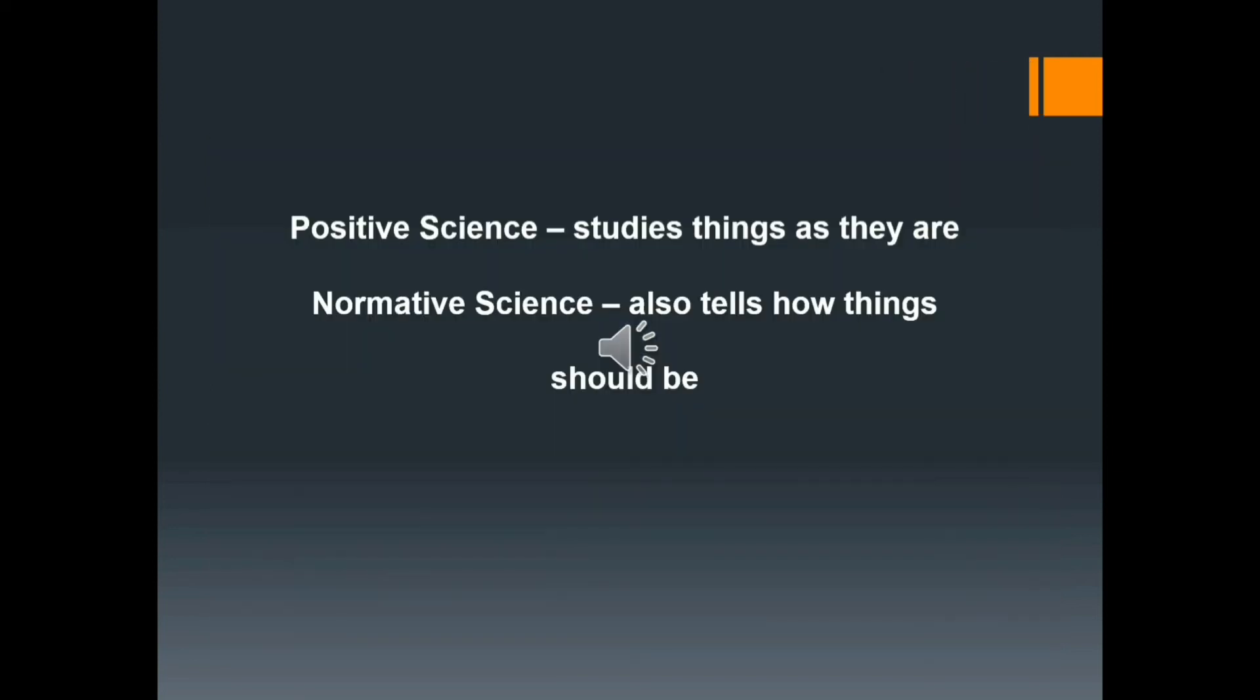If we consider economics as science, it can further be classified into being a positive science or a normative science. A positive science studies things as they are. For example, this is the extent of poverty in the economy. This is the rate of unemployment in the economy. It is studying things as they are.